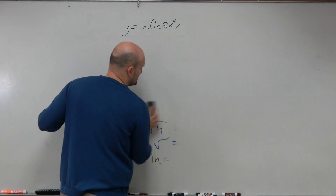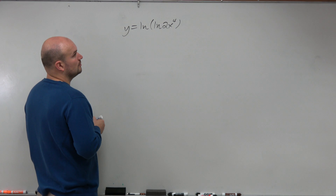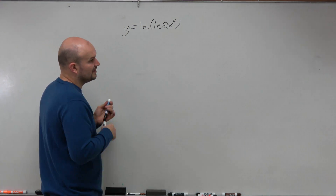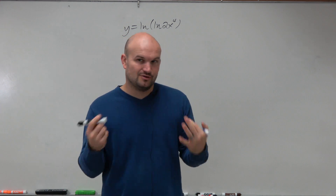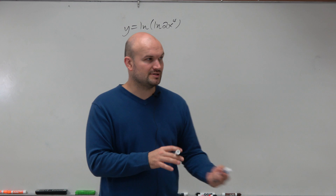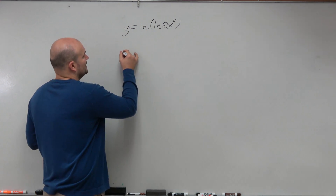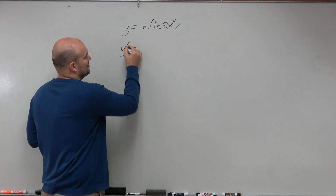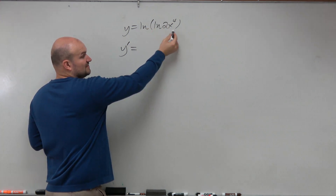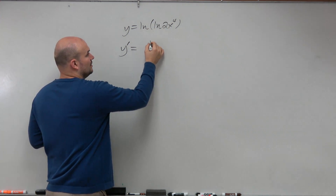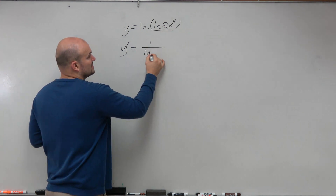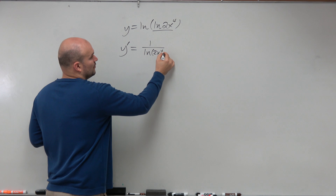So we do understand that this is a chain rule. So if we're looking at the chain rule, I said u prime over u, which I think u prime over u is great, but it could probably get confusing at this point. So what I would recommend doing is let's just do it step by step. The derivative of ln is the reciprocal of the inside, so you're basically taking 1 over what you're taking the ln of, which is ln of 2x to the fourth.